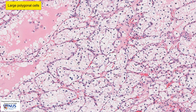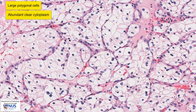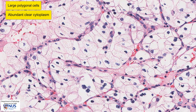These cells are polygonal in shape, they are large, and they contain abundant clear cytoplasm. At high magnification, we can appreciate that some of the cells appear to have an almost foamy or bubbly appearance in the cytoplasm. These cells appear clear because they are rich in lipid and glycogen, and lipid itself often washes off during our processing into microscopic slides.